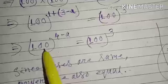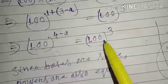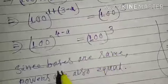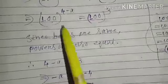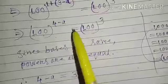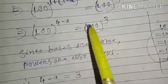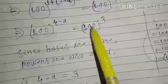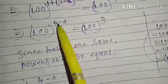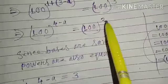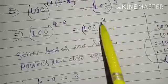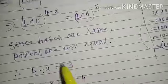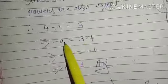Here you see the base on the left is 100 and the base on the right is also 100. Since the bases are the same, the powers must also be equal. So the power on the left is (4 − a) and the power on the right is 3.